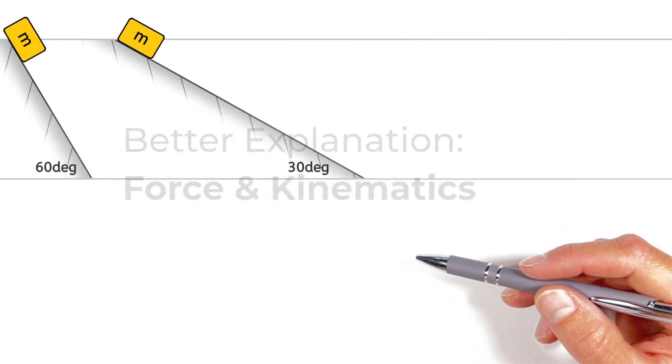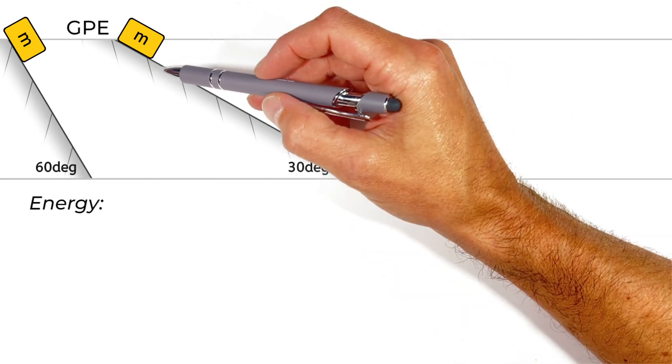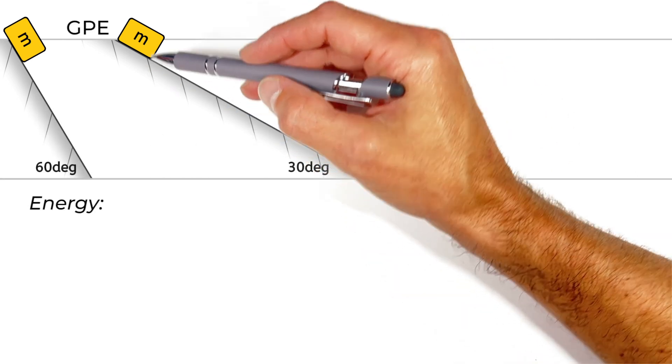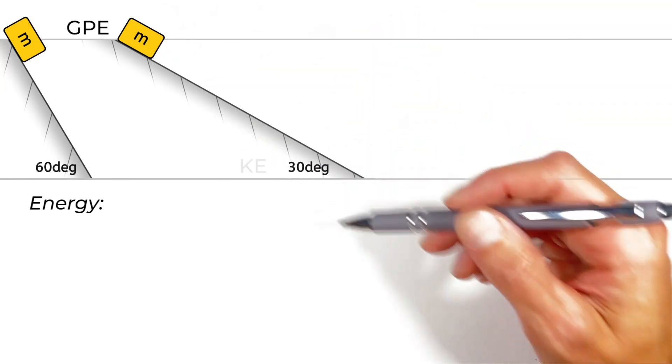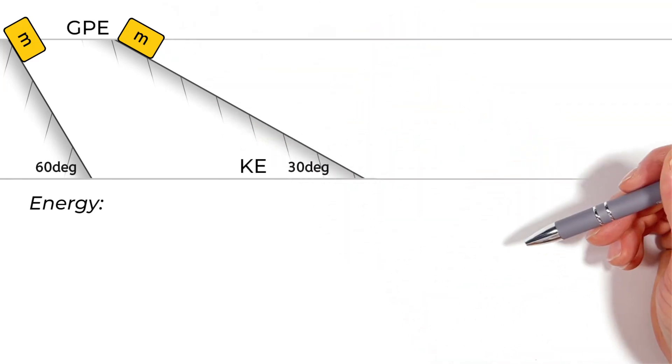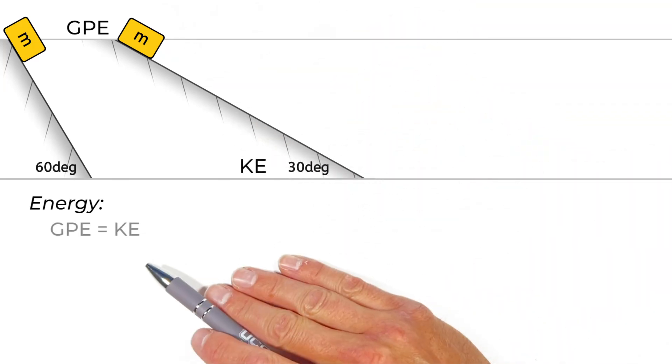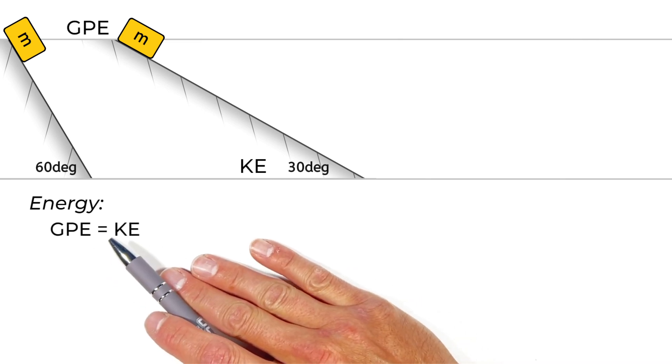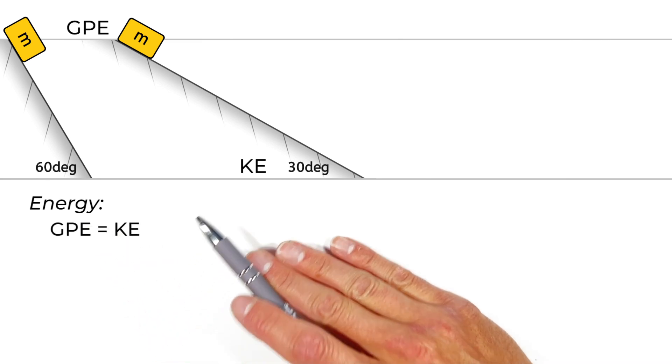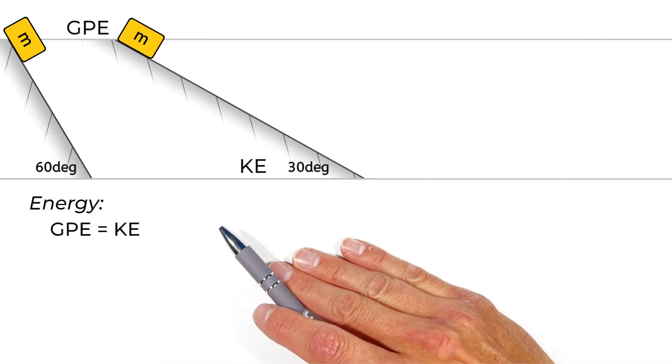The conservation of energy says that the potential energy which this block has at the top of the hill is going to turn into kinetic energy as the block slides down the hill. Or mathematically, we could say that the potential energy at the top of the hill is equal to the kinetic energy of the block when it reaches the bottom.